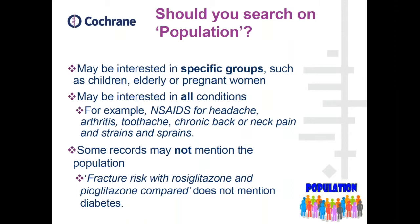An intervention may be used for more than one condition, and the adverse effects may occur independent of the condition that it was given to treat. For example, NSAIDs could be used for headache or arthritis, but the adverse effects could be the same independent of whether it was given for the headache or the arthritis. There's also the question of whether all the records would actually mention the population — for example, we did a review in which not all records actually contained the population and concentrated more on the intervention and the adverse effect.